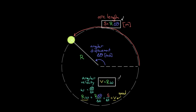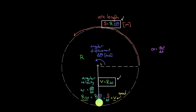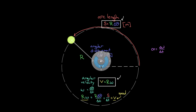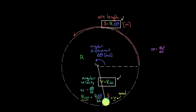Now we need to relate angular acceleration to regular acceleration. The angular acceleration, represented by the Greek letter alpha, is defined as the change in angular velocity per time — the rate at which omega is changing. If moving at a constant rate, there's no angular acceleration; if omega is increasing, there is angular acceleration.